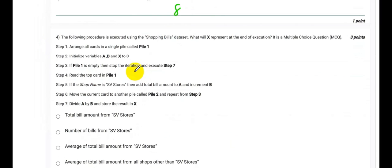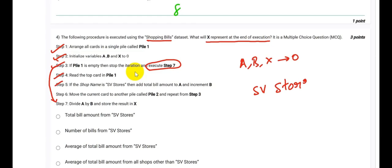In this way, the value of A will be 6, value of B will be 15, and value of C will be 8. With this we are done with the first question. Now coming to the fourth question: the following procedure is executed using the shopping bills dataset. What will X represent at the end of execution? Again, A, B, and X are zeros. If pile 1 is empty, stop the iteration and execute step 7.